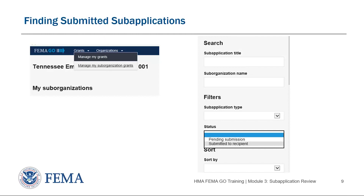You may see a very long list of sub-applications on your Manage My Sub-Organization Grants screen. On the right, you have the ability to search, filter, and sort sub-applications by status, sub-application type, or you can do text searches by name or title.